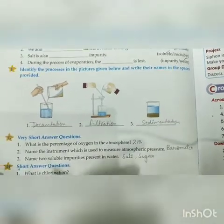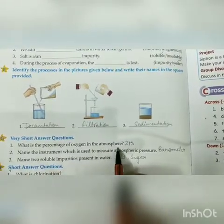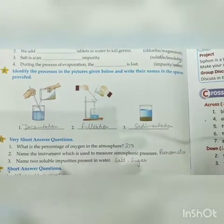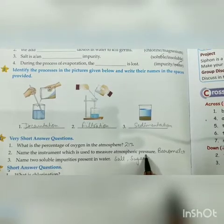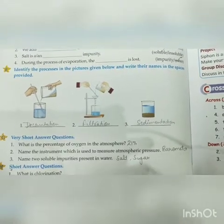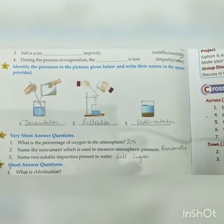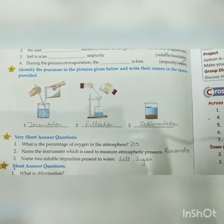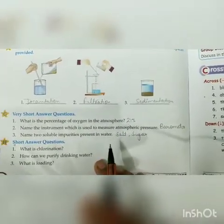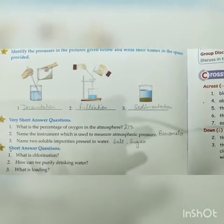Question number G: Very short answer questions. First: What is the percentage of Oxygen in the atmosphere? The answer is 21%. Next: Name the instrument used to measure atmospheric pressure — उस instrument का नाम बताना है जिसकी help से atmospheric pressure measure करते हैं। The answer is Barometer. Next: Name two soluble impurities present in water. The answer is Salt and Sugar, because when we mix salt or sugar in water, they completely dissolve and form a homogeneous mixture.